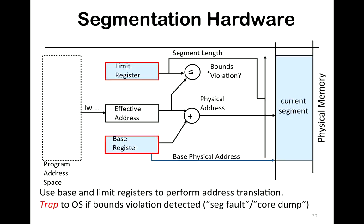In this figure, you've got your program address space on the left and your physical memory on the right. What the program issues is an effective address. You combine it with the base register to generate a physical address. Simultaneously, you compare the address's range against the limit register to check the segment length. If both are okay and the bounds are all okay, then you issue the address to physical memory. If the bounds are not okay or you can't address that location, then you're trapped to the OS and you get a segfault.